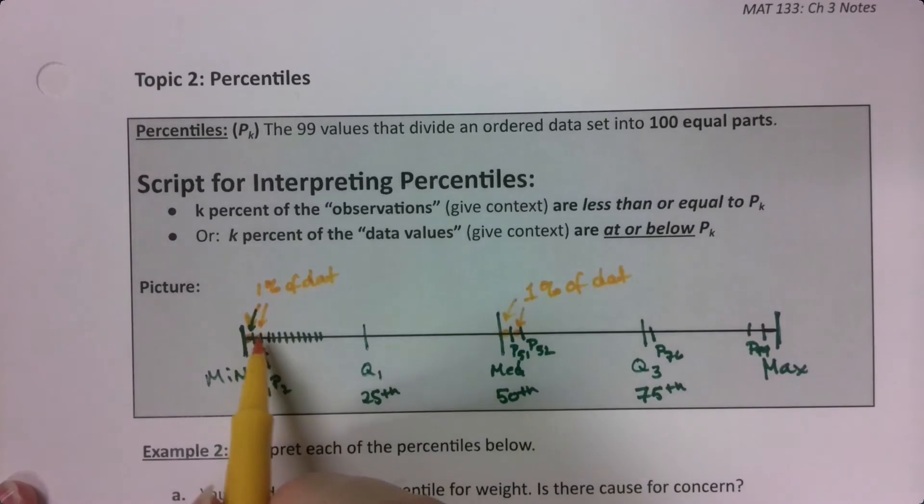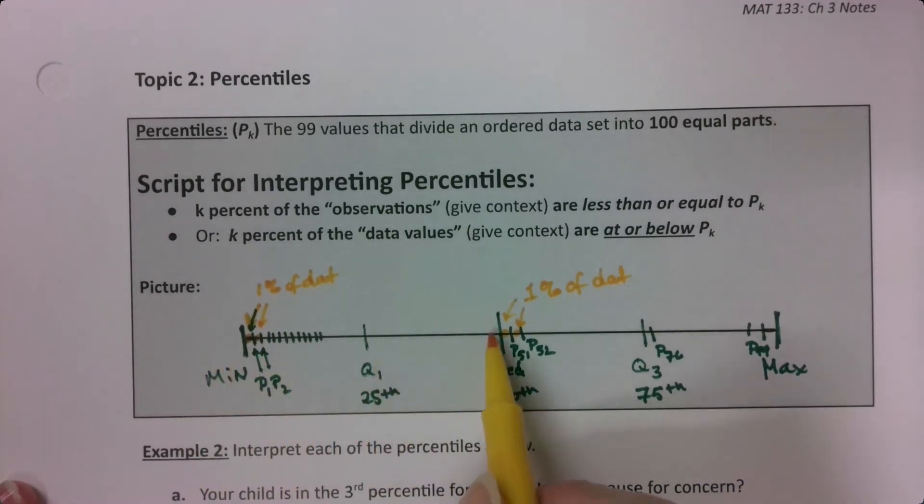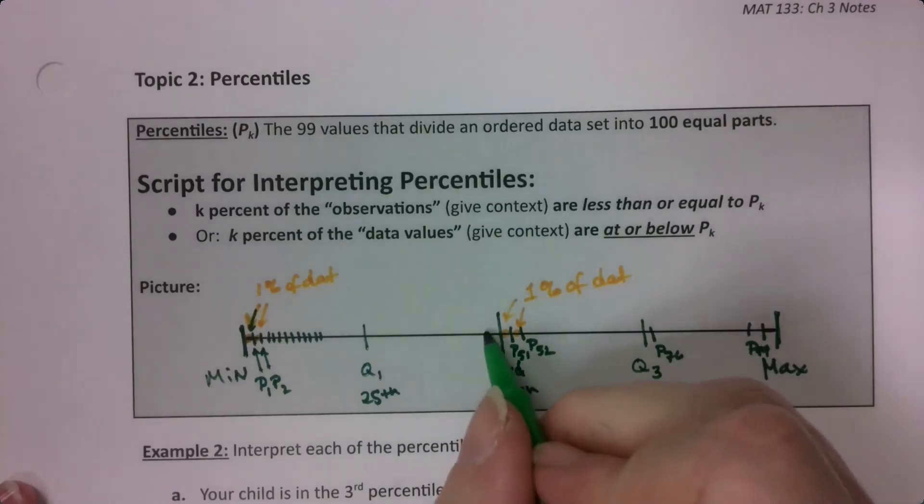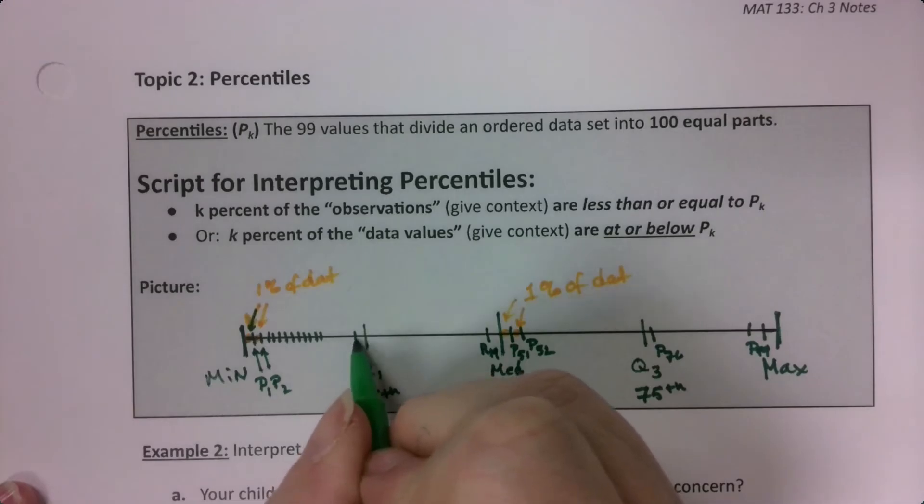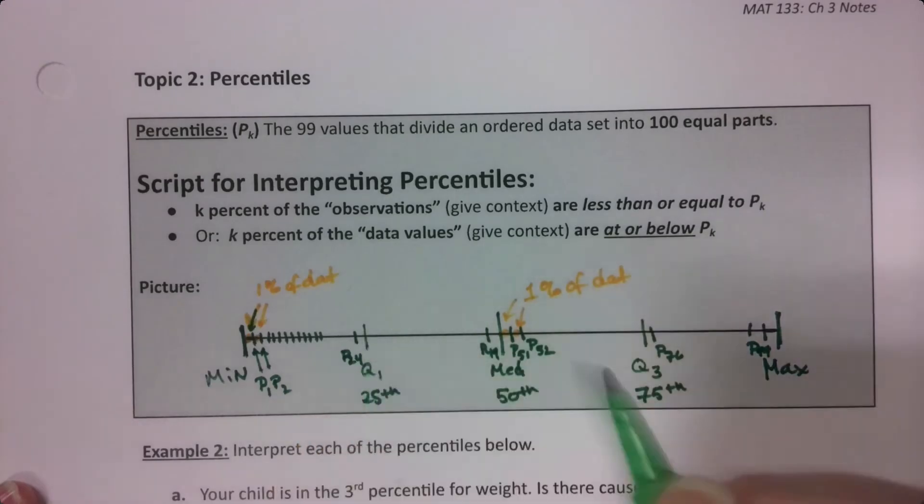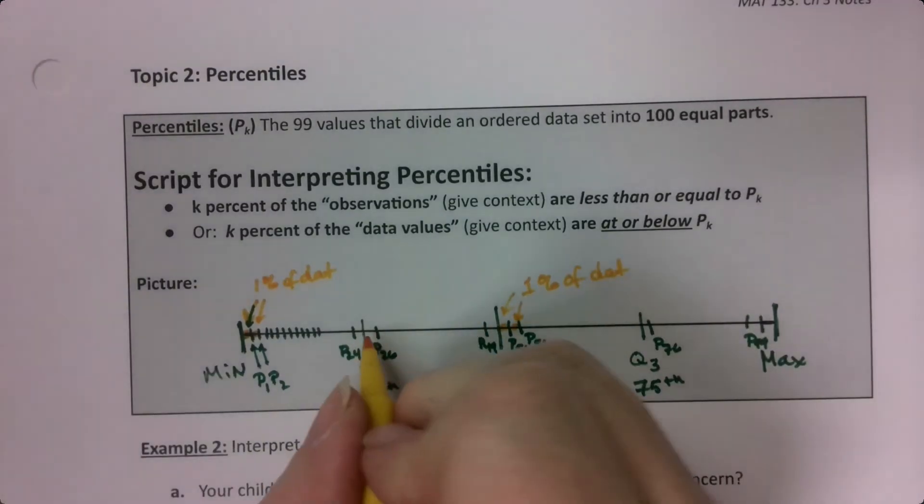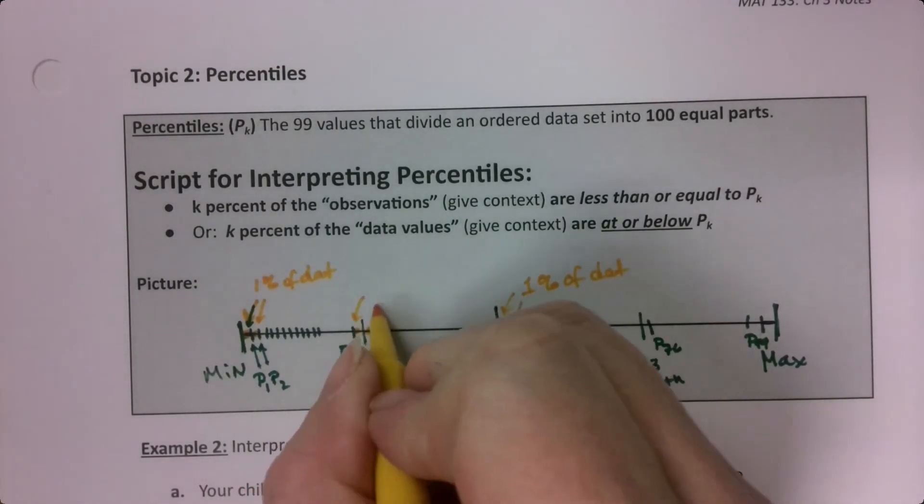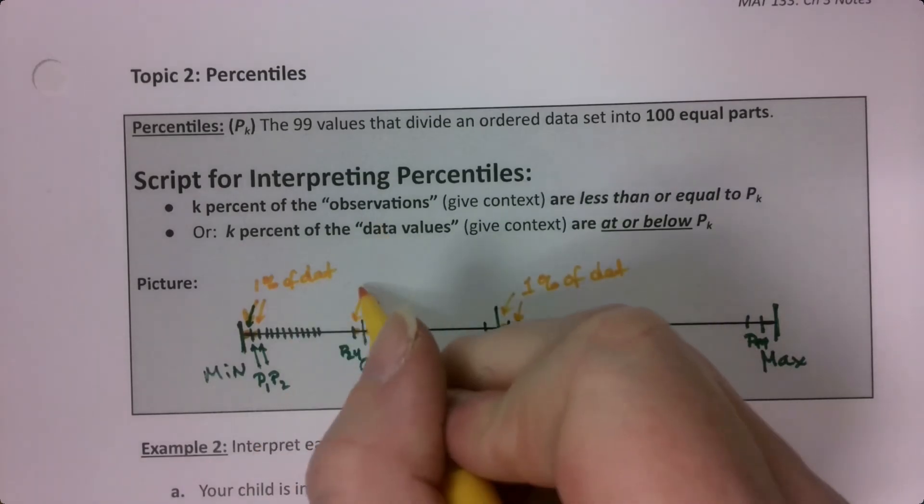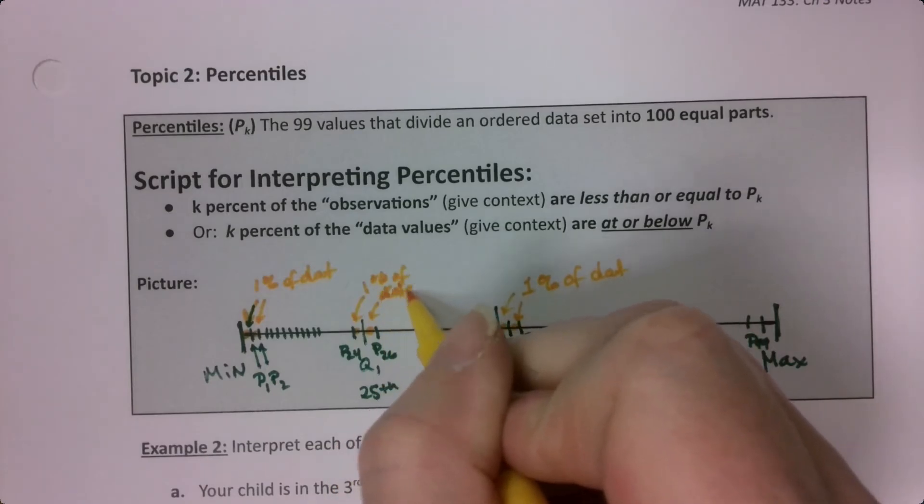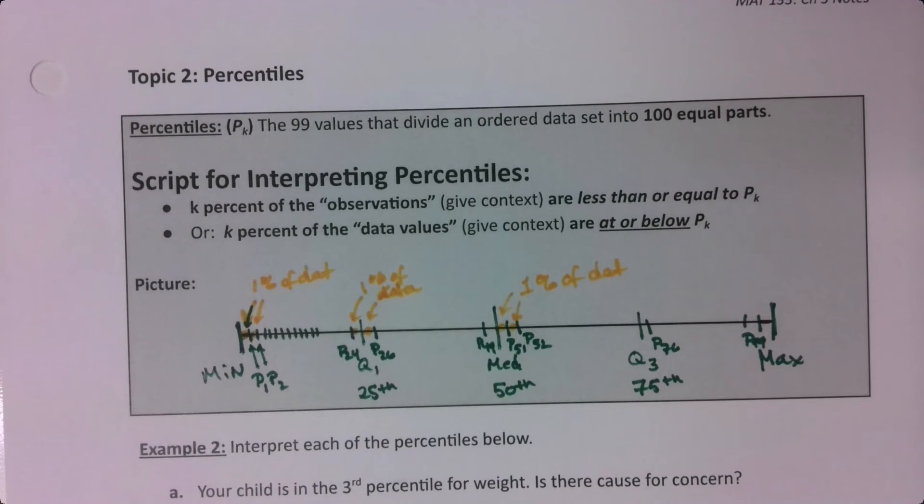And if you stack up 25 of those that gets you to the 25th percentile. If you stack up 50 of them you get to this one, the 50th percentile and so on. So for example, P49 is right here, P24 is right here, P26 is right here. And each of those sections, they don't have to be equal space, that's the thing. They have to have an equal number of data points in there. But each section has one percent of the data.